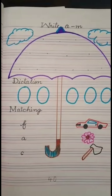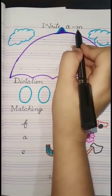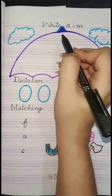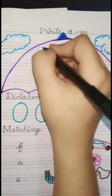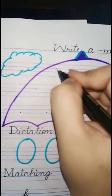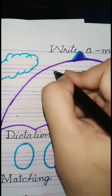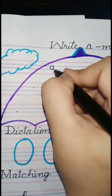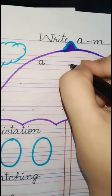Our topic is writing from a to ma. Today we have to write from a to ma. Write with me. First you write a. First of all we write a on the middle lines. Make a curve, go up then leg out. A - Apple.